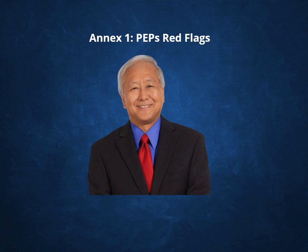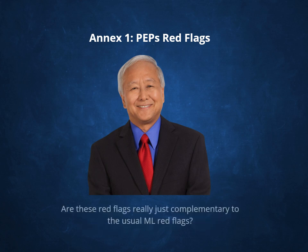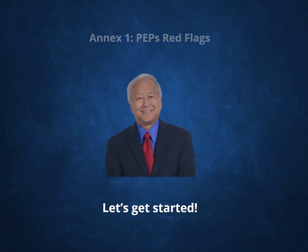Congratulations, you've made it to Annex 1, PEP's red flags, or indicators. In this section, we're going to talk about how to determine if a customer is a PEP, how you can use FATF red flags to detect misuse of the financial systems by PEPs, and how to better understand how these red flags are really just complementary to the usual ML red flags a reporting entity may already be using. By the way, this lesson includes a quiz, so stay focused so that you can ace it. Let's get started, shall we?